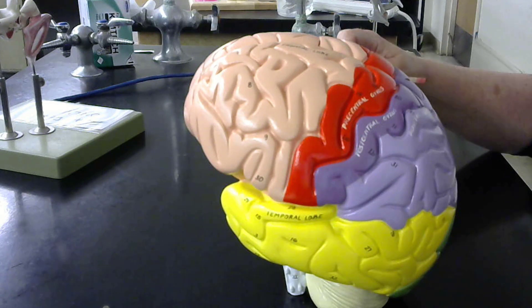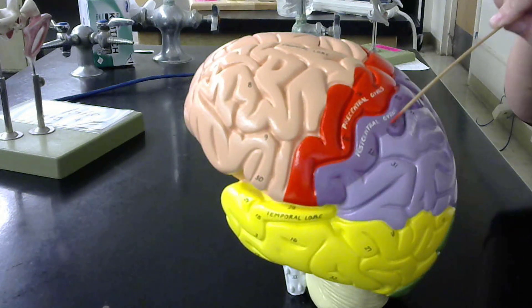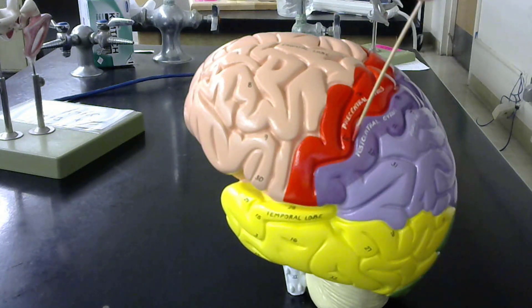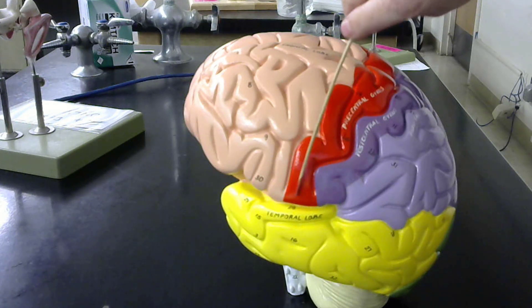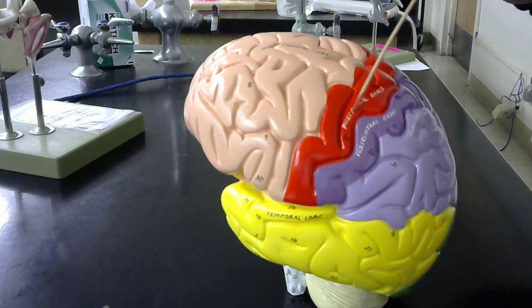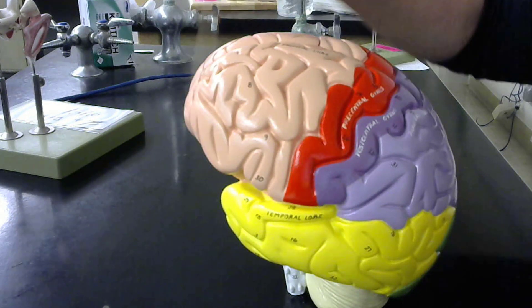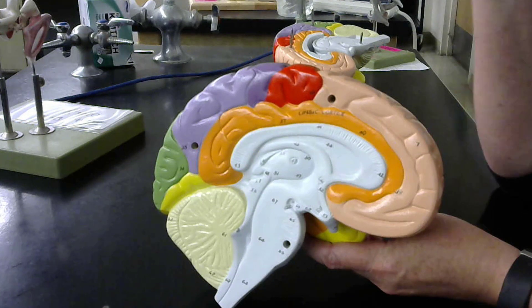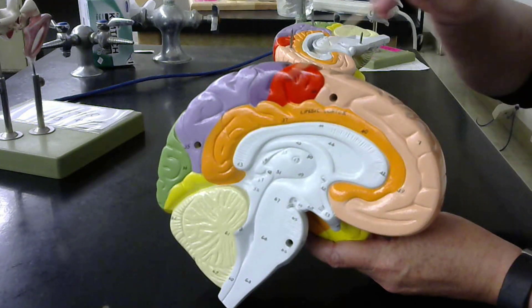In purple here, this is the parietal lobe, which includes the postcentral gyrus - the primary somatosensory cortex. Here is the central sulcus, and the precentral gyrus is the primary motor cortex. Including the primary motor cortex and traveling anteriorly, we have the frontal lobe. This outer portion of the brain is all cerebral cortex.